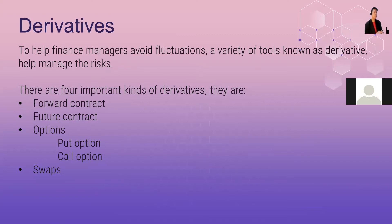There are four important kinds of derivatives: forward contract, future contract, options — which include put option and call option — and then swaps. We'll talk about each of these derivatives.